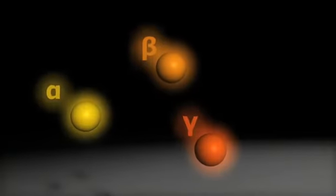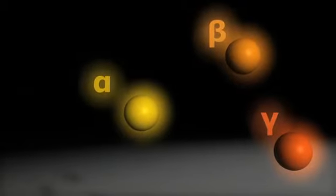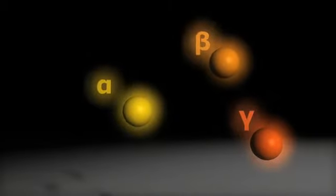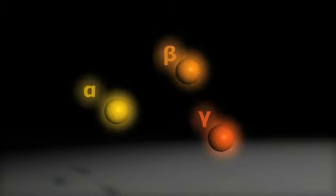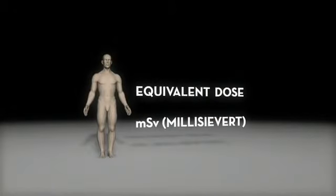To obtain a more precise measure, different types of radiation are given different weights by which the absorbed dose is multiplied. This way, doses that are more harmful and have greater weights result in a higher figure.